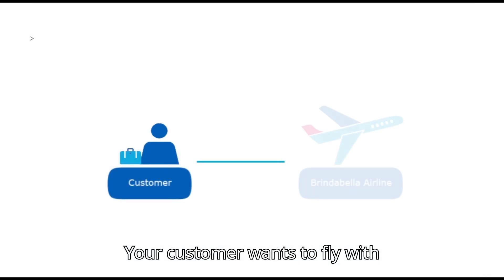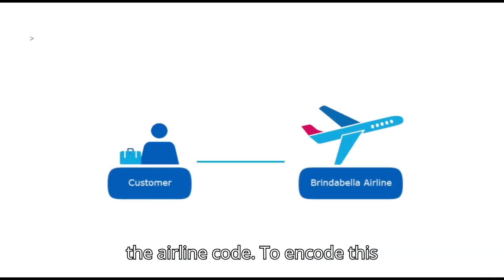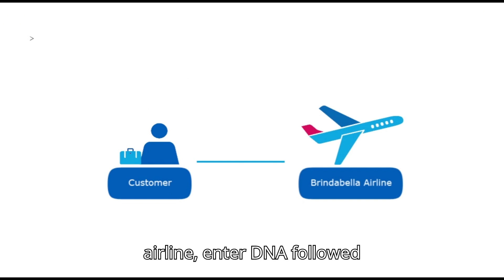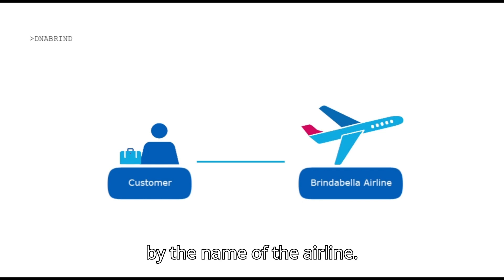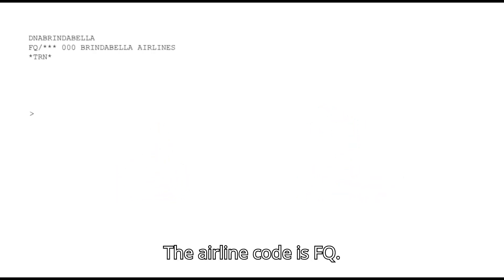Your customer wants to fly with Brinda Beller Airlines and you need to find the airline code. To encode this airline, enter DNA followed by the name of the airline. The airline code is FQ.